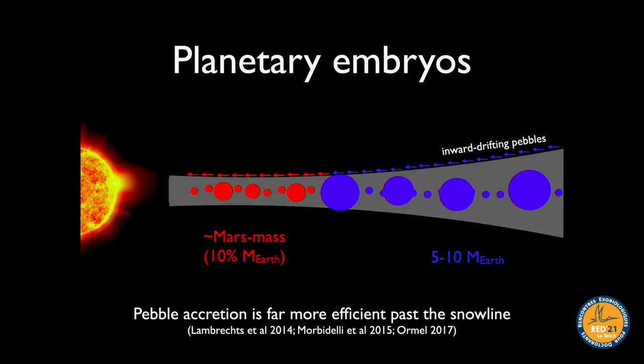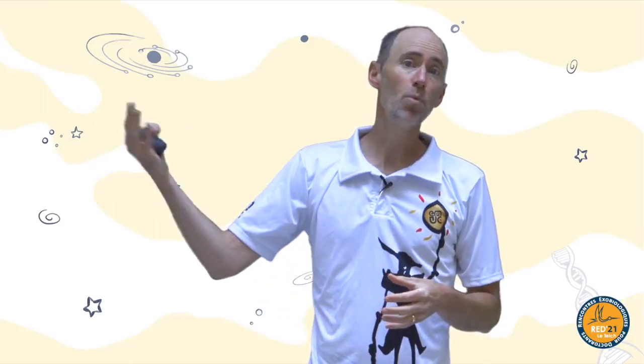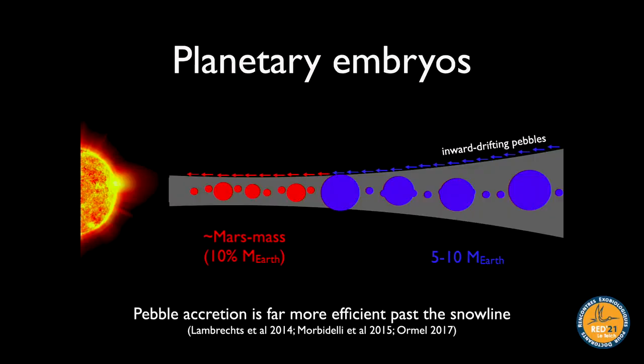Why is growth faster past the snow line? Pebbles there aren't just tiny dust grains — they're clumps of grains stuck together with ice, making them somewhat bigger. This larger size translates into a much faster growth rate. According to models, in the time it takes rocky planetary embryos to grow to the size of the Moon or Mars, objects past the snow line where ice is a building block can grow to five or ten Earth masses.